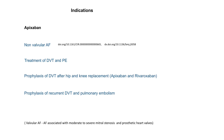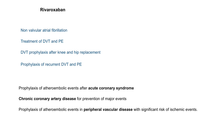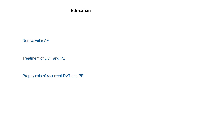Other indications of apixaban include treatment of DVT and pulmonary embolism, prophylaxis of DVT after knee and hip replacement, and prophylaxis of recurrent DVT and pulmonary embolism. Rivaroxaban has similar indications and can additionally be used in acute coronary syndrome, chronic coronary artery disease, and peripheral vascular disease to prevent ischemic events. Edoxaban has some indications similar to apixaban and rivaroxaban; however, its use for prophylaxis of DVT after hip and knee replacement has regional variations.